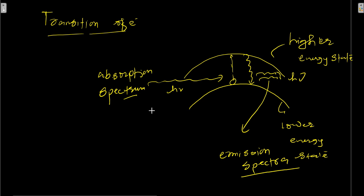So an atom has two types of electron transitions. When the electron jumps from lower to higher energy level, it absorbs energy — that is the absorption spectrum. When it jumps from higher to lower, it emits radiation — that is the emission spectrum. This can happen via light, field emission, electrical excitation, thermal emission, or the photoelectric effect.